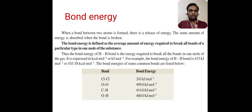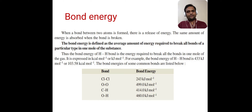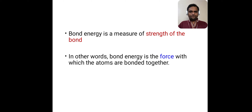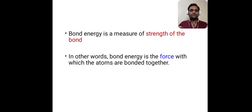In this table, some bonds and their bond energies are given. Bond energy is a measure of the strength of the bond — whether a bond is stronger or weaker, we can predict it from the bond energy.